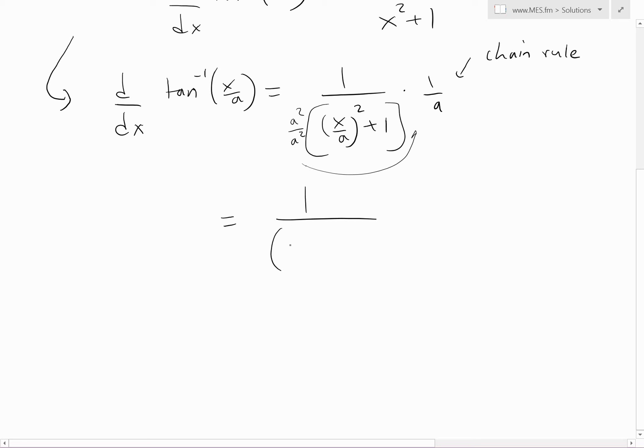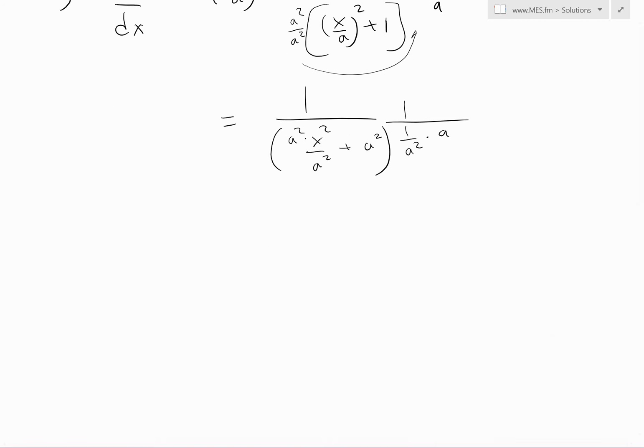I'll multiply it inside here. So this a squared goes in, a squared times by a squared, expand this out, and then plus a squared. Now we have 1 divided by a squared and then times it by this a right here.